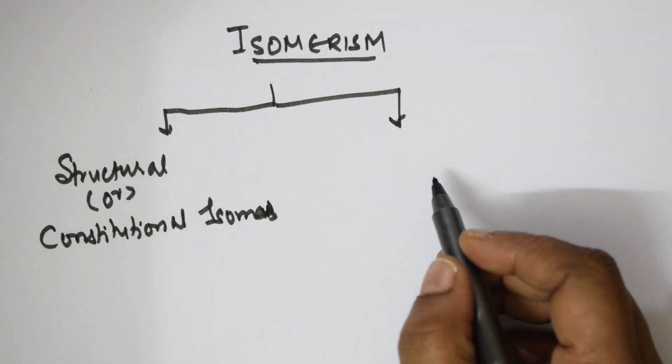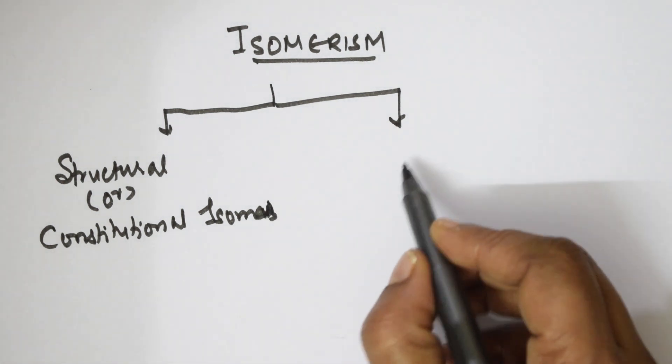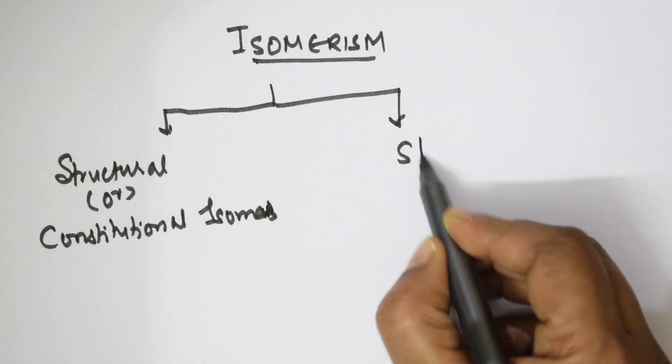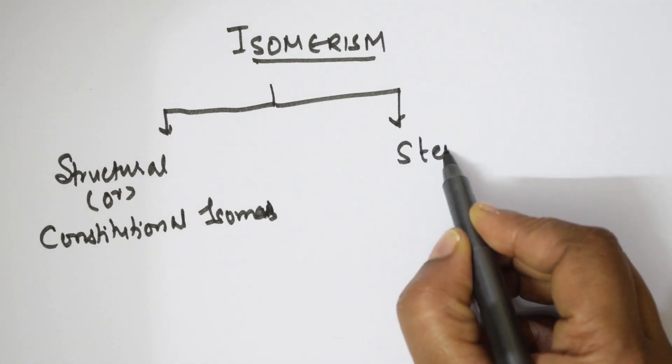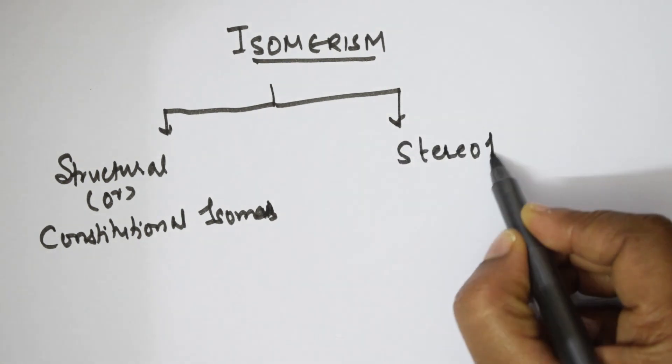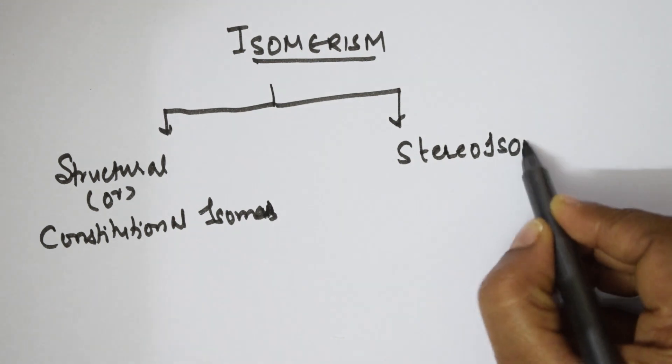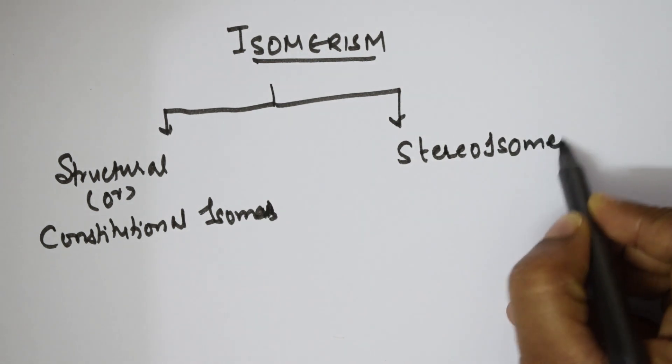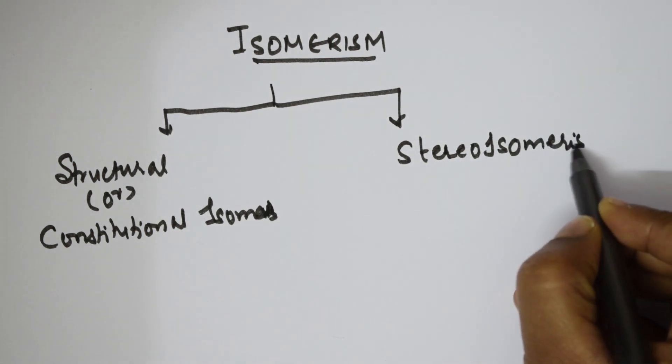The second type of classification is called stereo isomerism — stereo isomers.